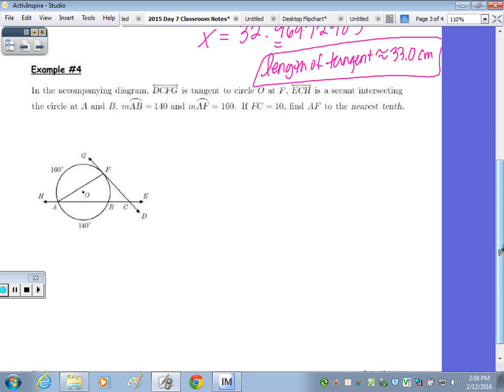In the accompanying diagram, DCFG is tangent to circle O. Now, the tangent line does not intersect a radius. A radius is not drawn. So, we don't have a 90 degree angle within that triangle. ECH is a secant. Measure of arc AB is 140. The measure of arc AF is 160. And FC is 10. Find AF to the nearest tenth.